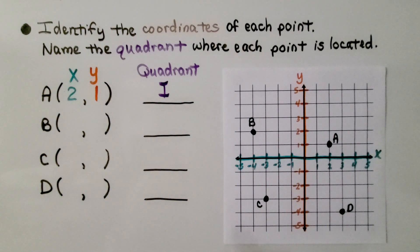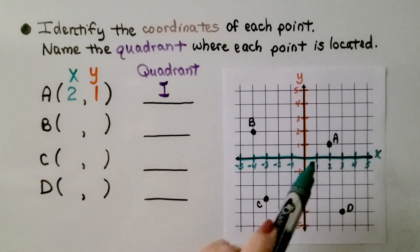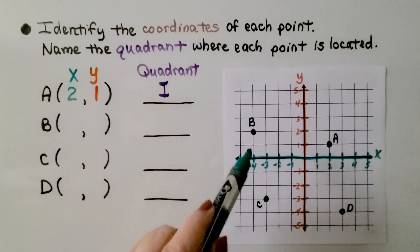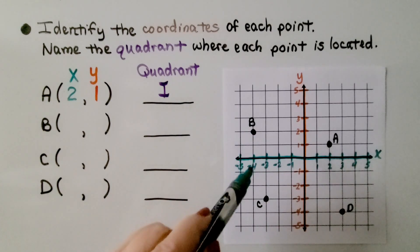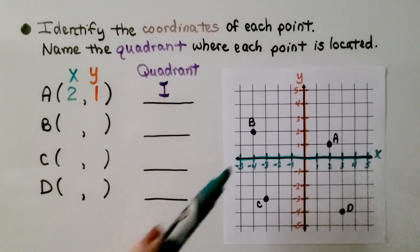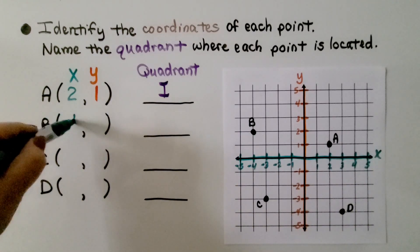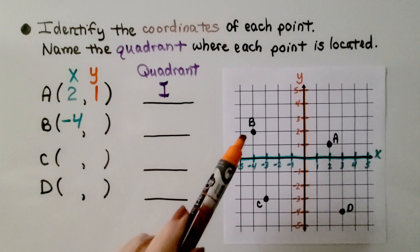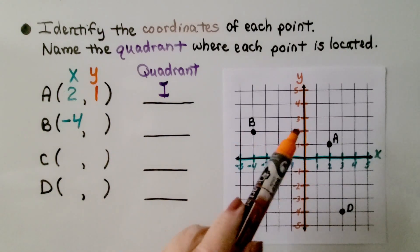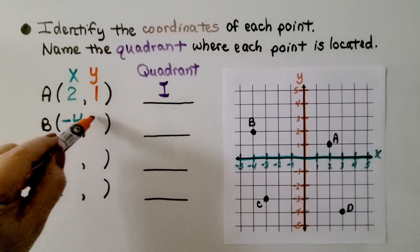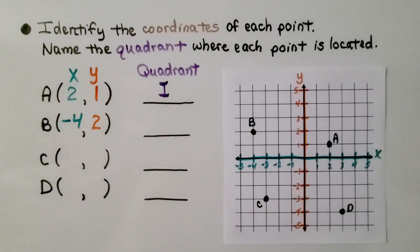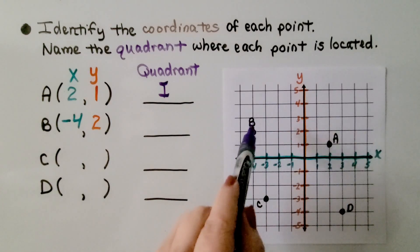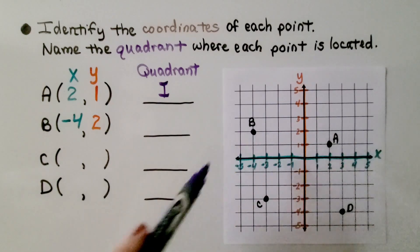For point B, we come from the origin and look — B is at negative four on the x. So we write negative four. And where is it on the y? Looking across to the y-axis, it's at positive two. Making the letter C — one, two, three, four — so it's in quadrant two.